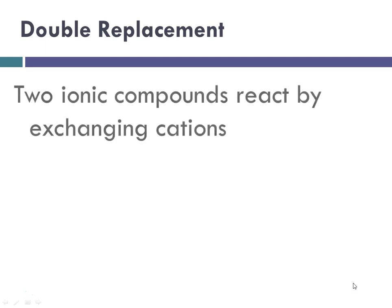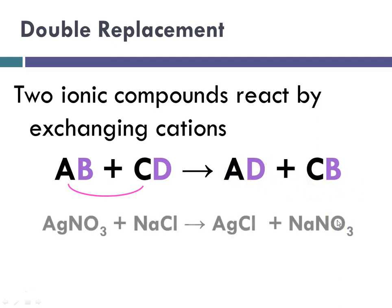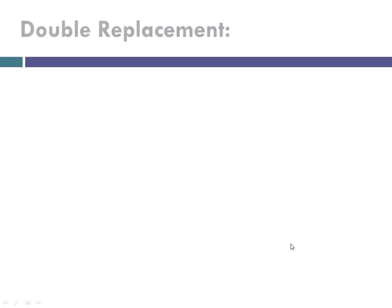In a double replacement, there are two ionic compounds and they react by exchanging their cations. So in my example here of AB plus CD, what's going to happen is the cations are going to swap places so that now A is with D and C is with B. In our example here, silver nitrate plus sodium chloride react to produce silver chloride plus sodium nitrate. And once we've written our two possible products, we always have to consult our solubility table.